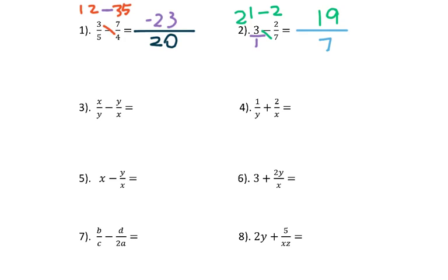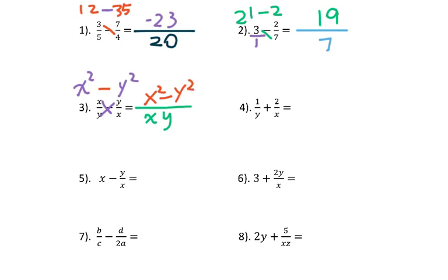For number three, multiply the denominators: y times x gives xy. Cross multiply: x times x is x², and y times y is y². There's a minus sign between them, so the answer is x² minus y² over xy. For number five, write x as x over 1. Multiply denominators: 1 times x is x. Cross multiply: x times x is x², and 1 times y is y. With subtraction, the answer is x² minus y over x.